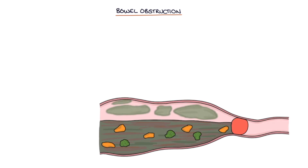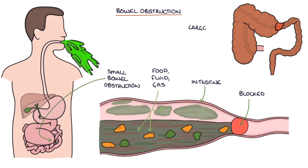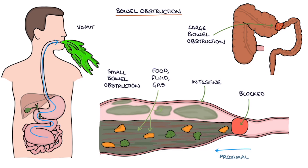A bowel obstruction refers to when the passage of food, fluid, and gas through the intestines becomes blocked. Small bowel obstruction is more common than large bowel obstruction. Obstruction results in a build-up of gas and fecal matter proximal to the obstruction, causing back pressure resulting in vomiting and dilation of the intestines proximal to the obstruction.